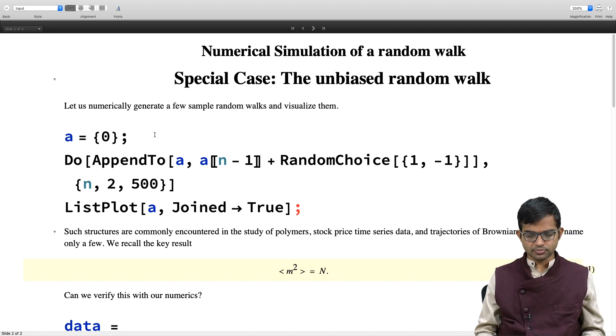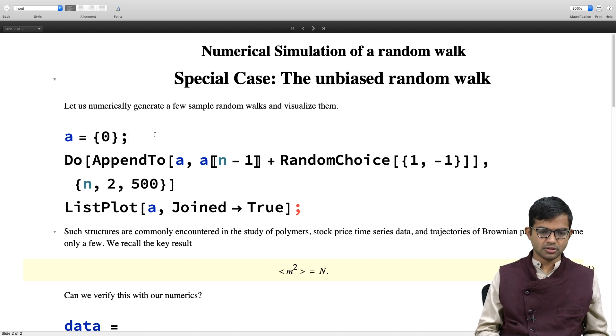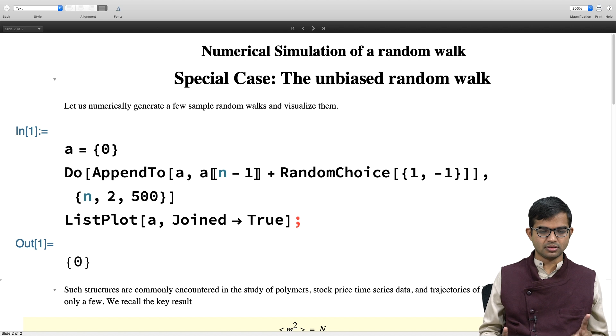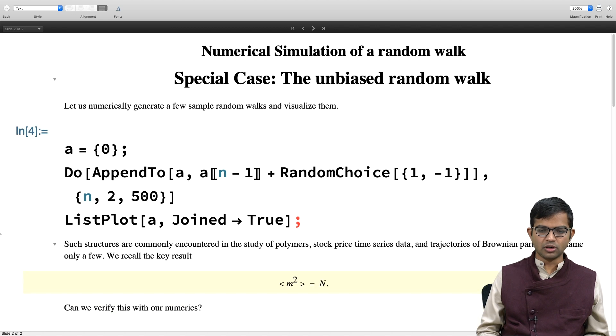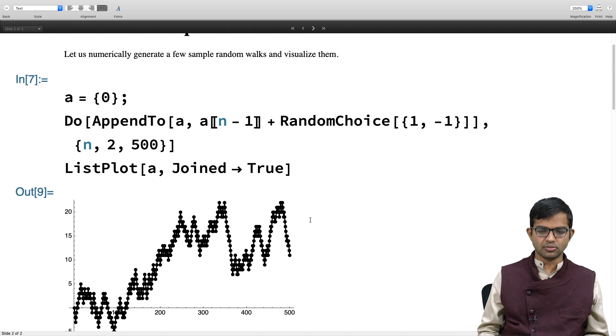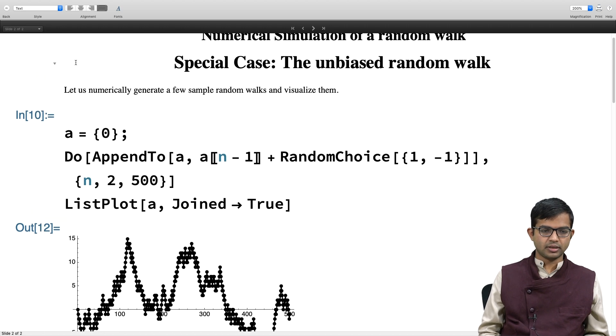There is a very nice simple approach to writing code for this. You can first generate a random walk and visualize it. Let me create an array of size 1 with just one element, and use the do command along with append to generate a random walk. Let me run this first and then explain what is going on.